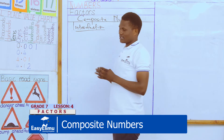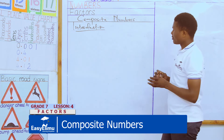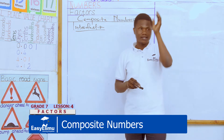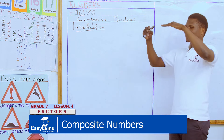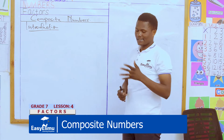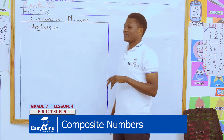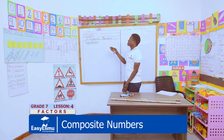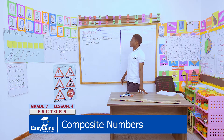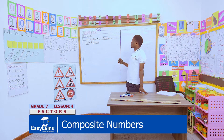In today's session we are going to discuss composite numbers. This is another group of numbers that we are yet to discuss. Remember in our previous sessions we talked about natural numbers, and I told you that natural numbers is a canopy under which we have prime numbers, odd numbers, and even numbers. In addition to all that, we have several other groups of numbers. So at this juncture we are only going to discuss composite numbers.